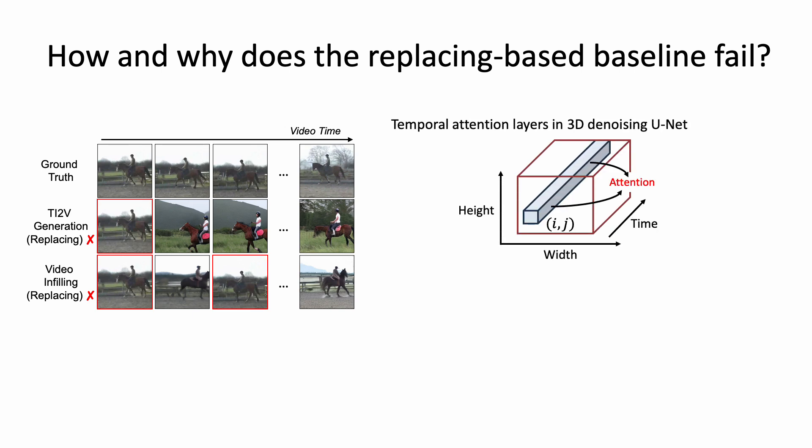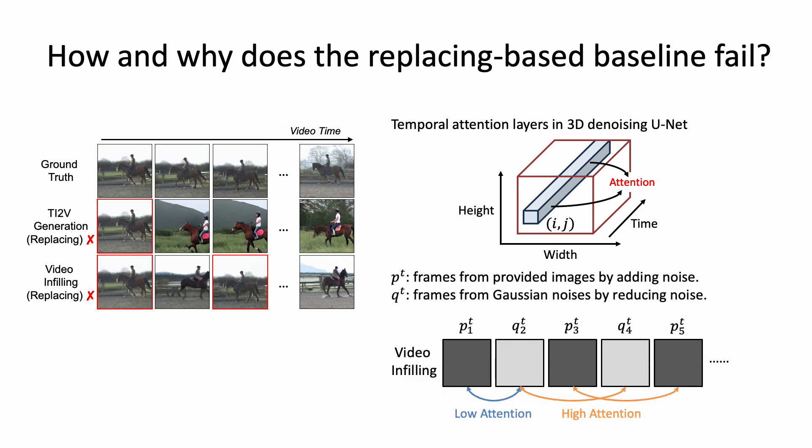Thus, for the temporal attention layers in the 3D denoising U-Net, the attention values between frames that were sampled in different ways will be lower, while the attention values between frames that were sampled in the same way will be higher. In other words, the temporal attention layers tend to ignore the provided frames.